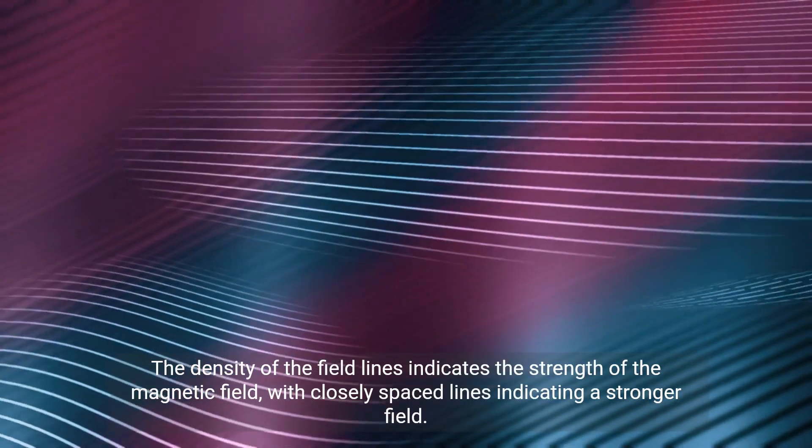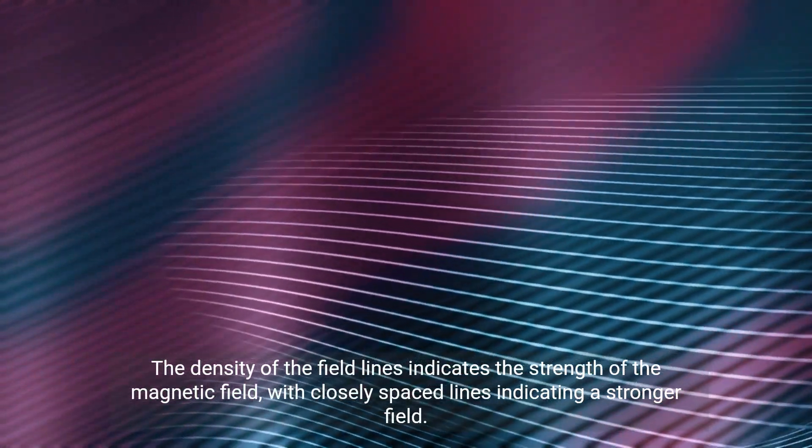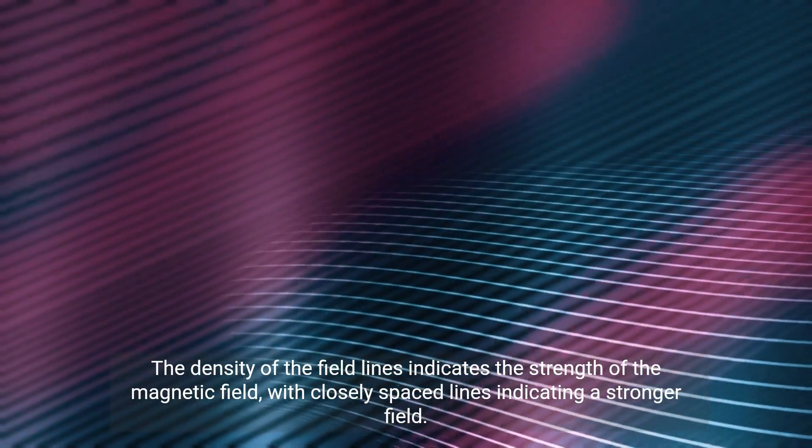The density of the field lines indicates the strength of the magnetic field, with closely spaced lines indicating a stronger field.